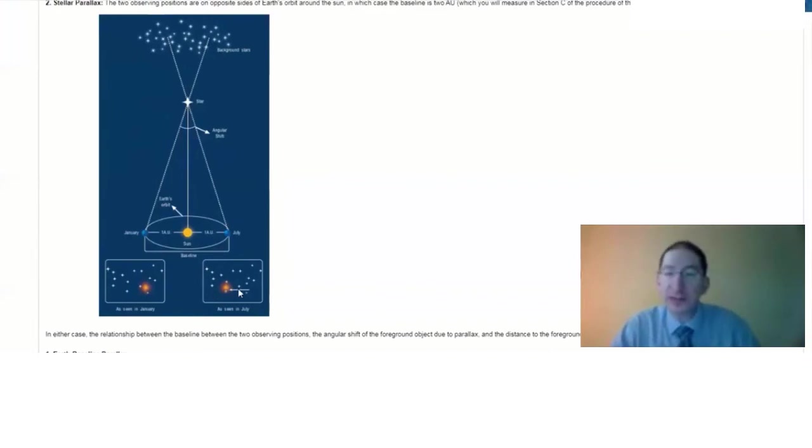So if you measure this angular shift, and if you know the distance between the observing points, in this case two astronomical units, you can calculate the distance to the nearby star.